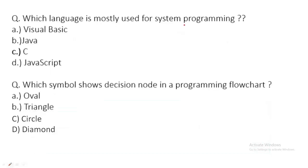The first question: which language is mostly used for system programming? Options include Visual Basic, Java, C, and JavaScript. Although languages like Java, Python, and C++ are used for system programming, the most commonly used language for system programming is C. So the correct answer is C.